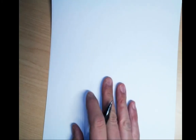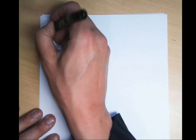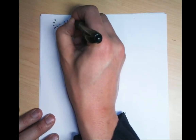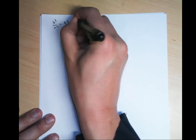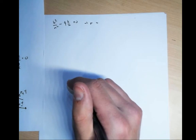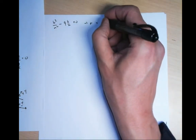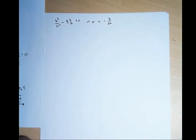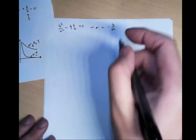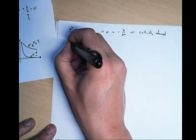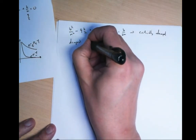Case 2 — critically damped: b squared over m squared minus 4k over m equals zero. In this case, sigma equals minus b over 2m.